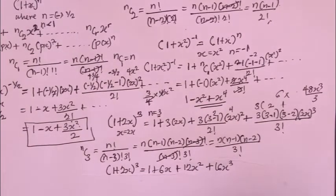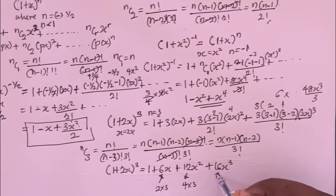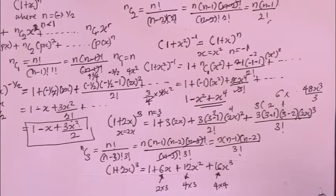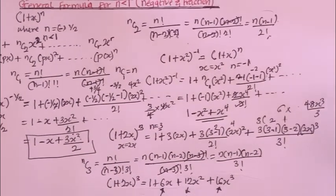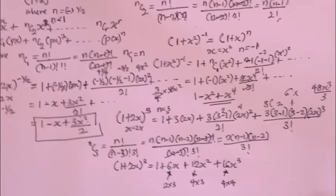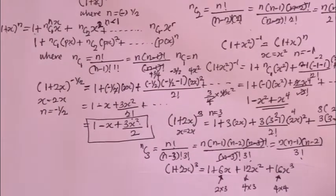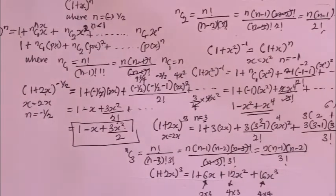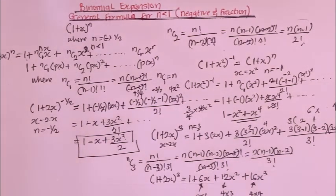So the full expansion is 1 plus 6x plus 12x² plus 16x³. This general formula for binomial expansion works for negative and fractional n, but you can always apply it to all integers whether negative, positive, or fractions. If you enjoyed this video, please like, share with your friends, and don't forget to subscribe. I'll solve more questions on this general formula so you'll have a better understanding. Thanks for watching.